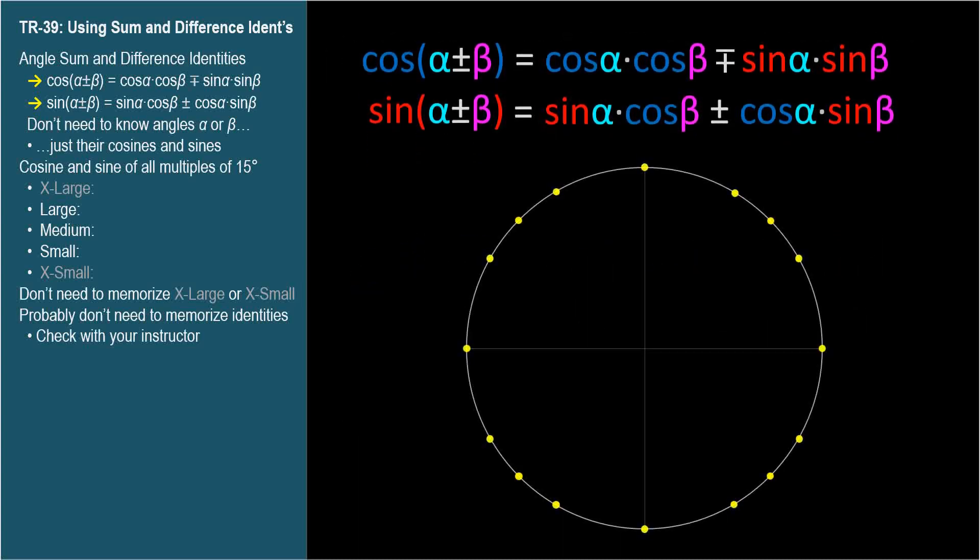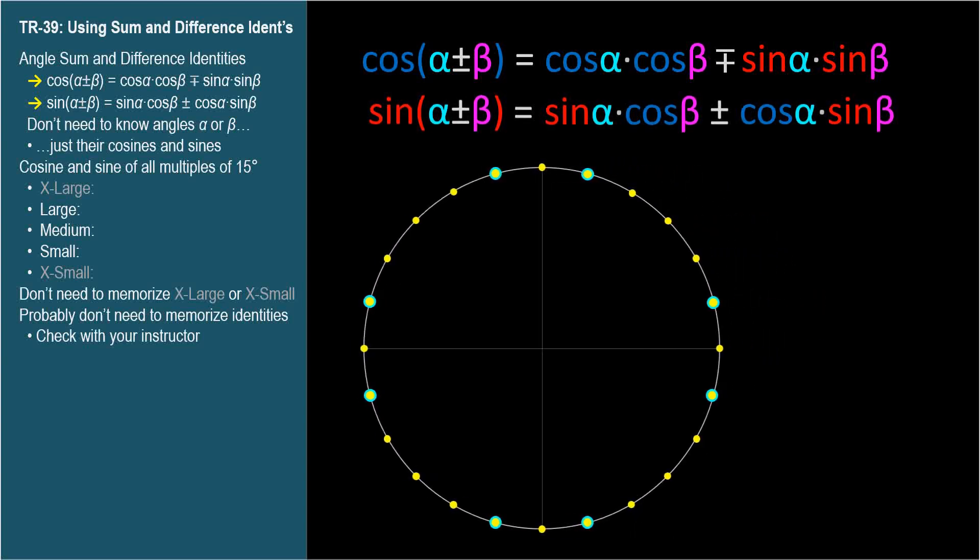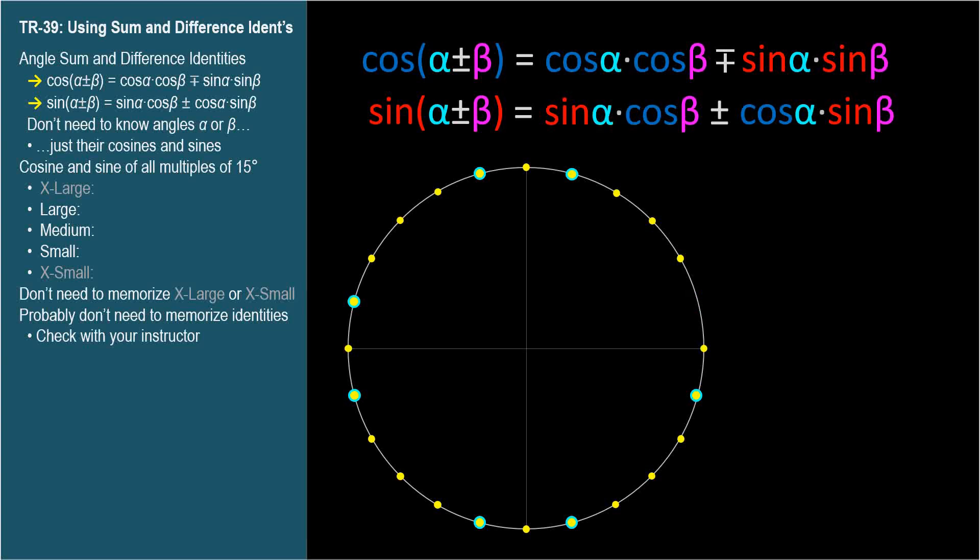Another exercise on the unit circle. Our common angles cover 15 degree increments all the way around the circle, except for these eight gaps. Let's use the angle sum and difference identities to find the cosine and sine of 15 degrees. We know from the circle symmetry that the two numbers we find will be the cosine and sine of all these other angles, though they can be in either order, and positive or negative, depending on the angle's quadrant.